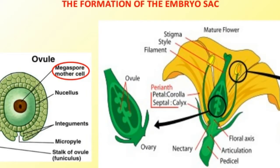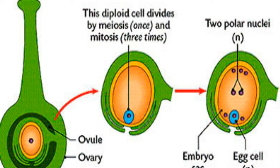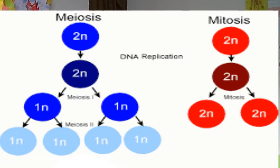Inside each ovule, a large diploid spore mother cell develops. This cell divides by meiosis to produce four haploid cells; all but one degenerate. The one surviving haploid cell develops into an embryo sac, which grows larger as its haploid nucleus divides by mitosis three times, forming eight haploid nuclei.